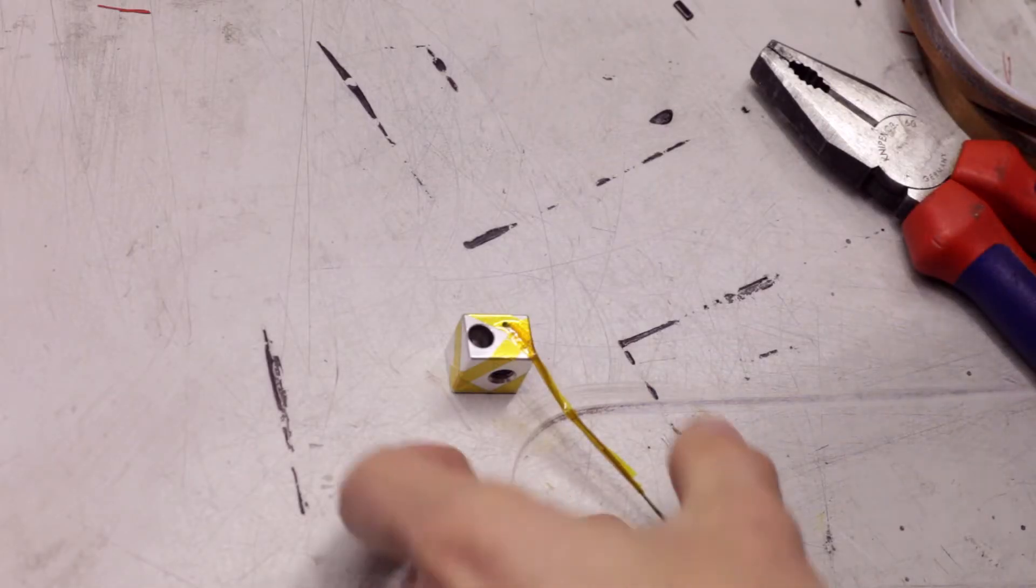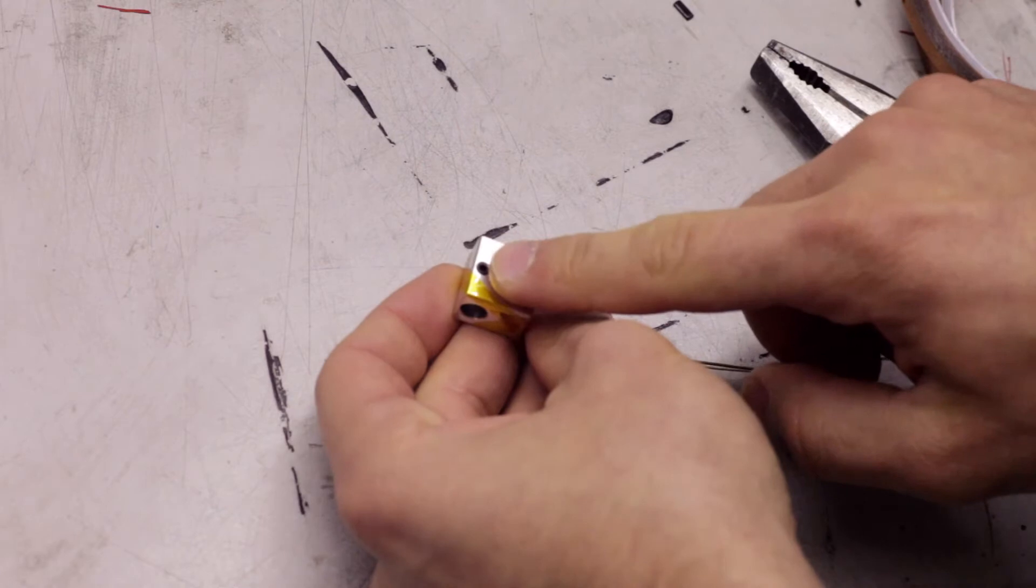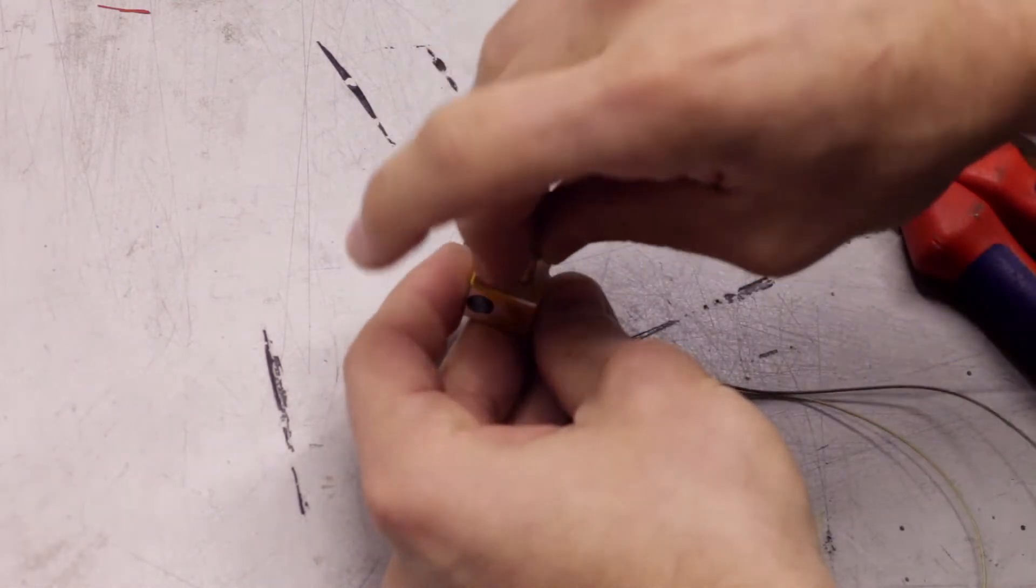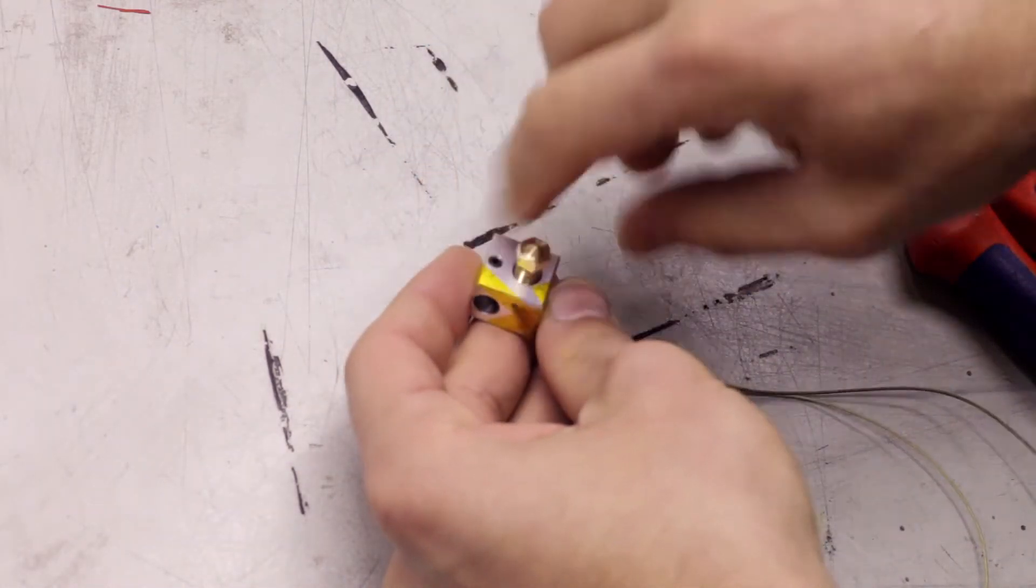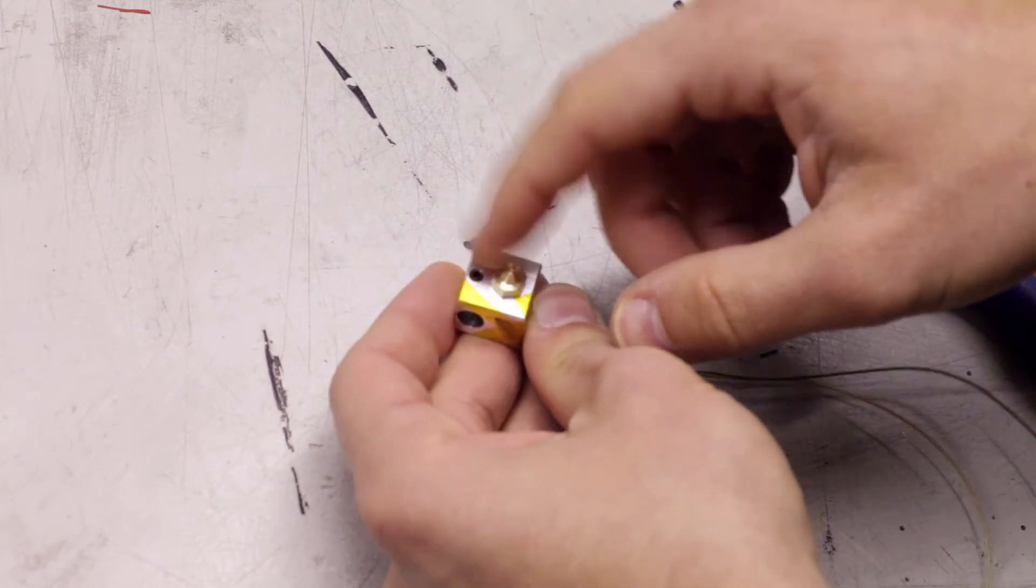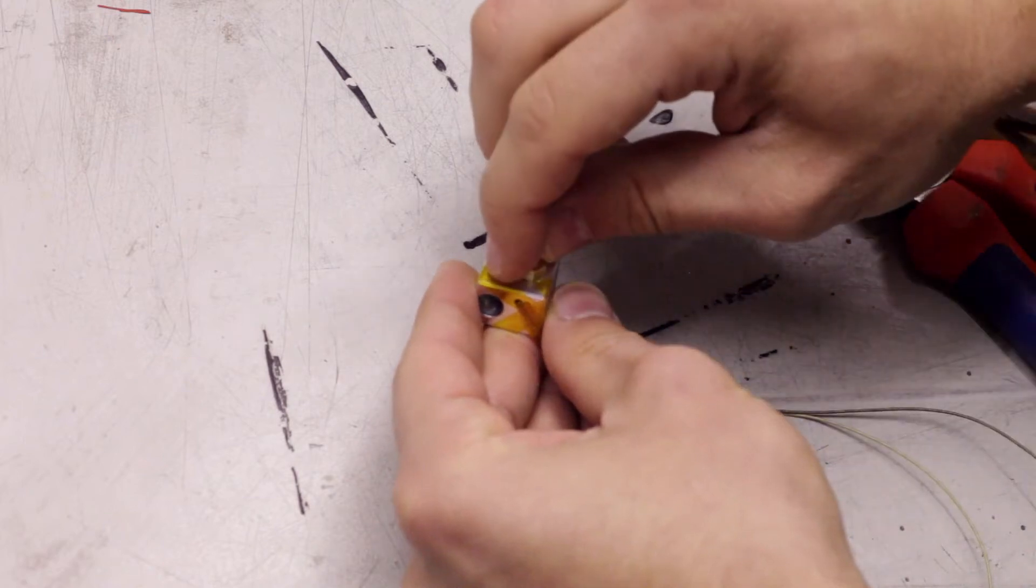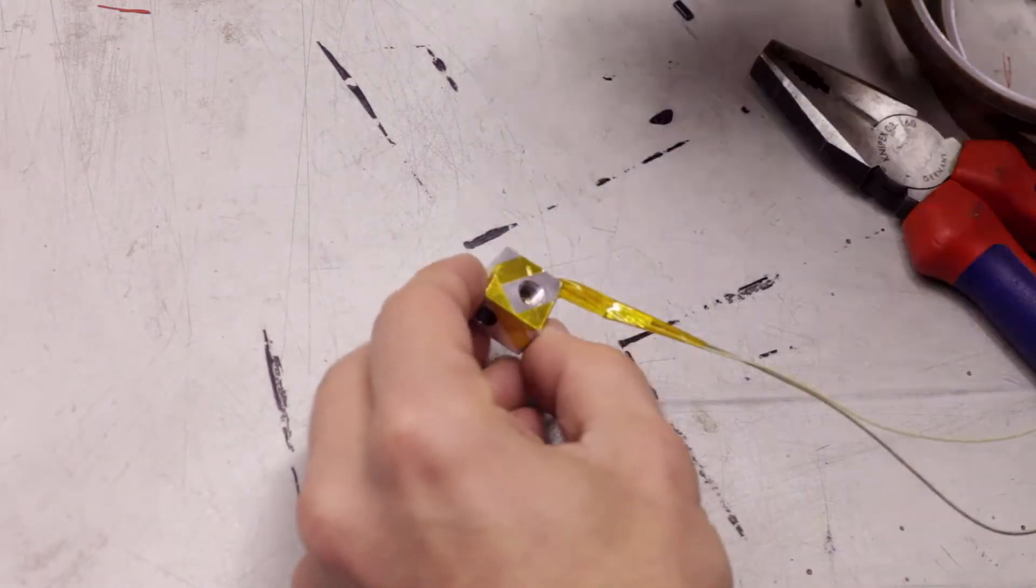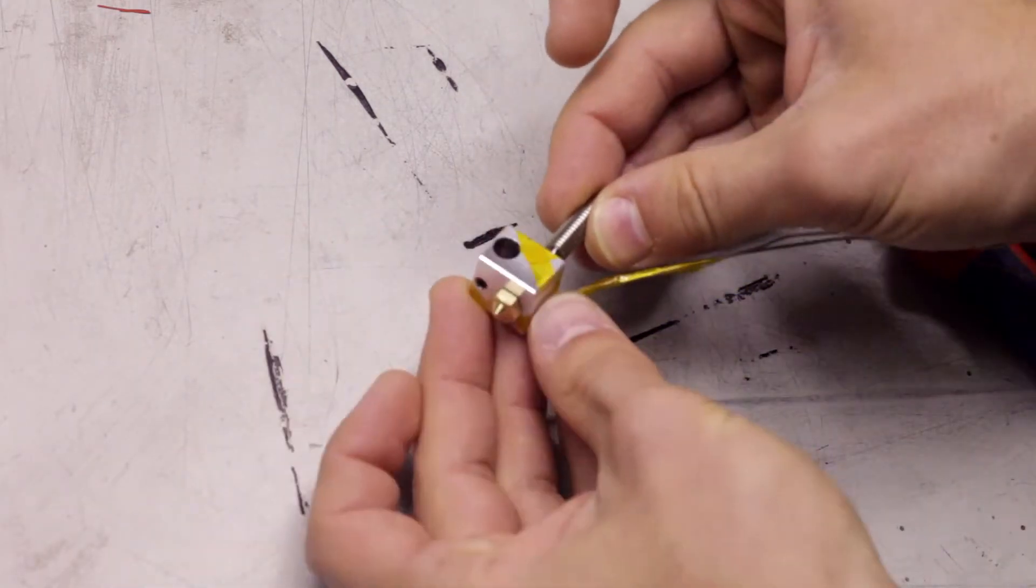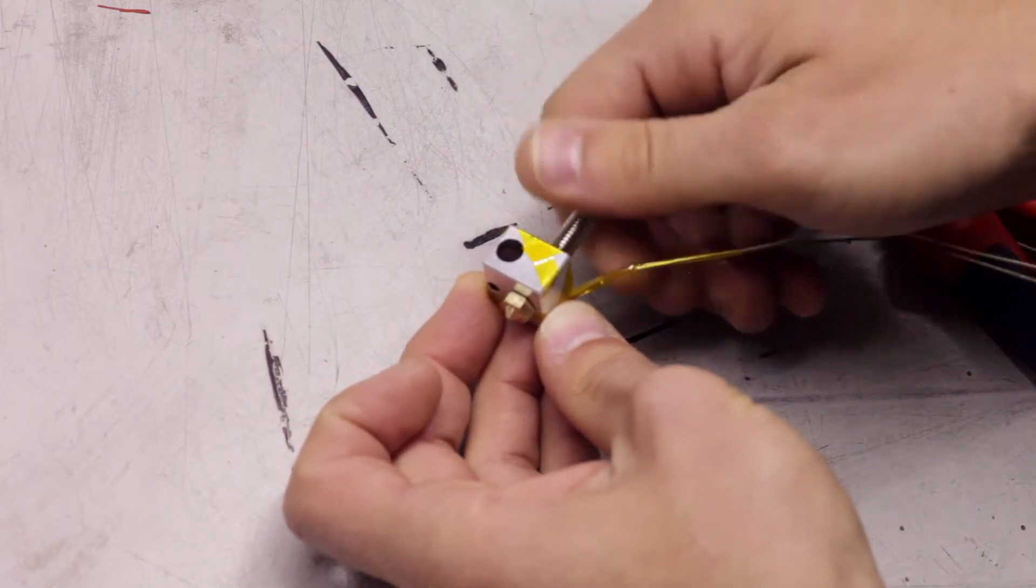Take the nozzle and screw it into the heater block from the side that has the threaded hole in it. Once it's all the way in, unscrew it by a quarter turn. This will make sure that the nozzle will actually seal against the heat break and not against the heater block. Then screw in the heat break from the other side. Just make it finger tight for now, we'll tighten it down later.